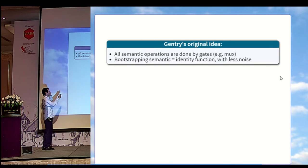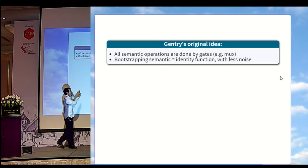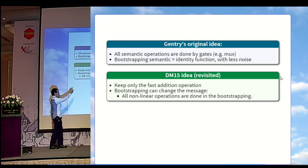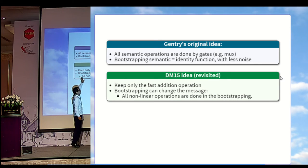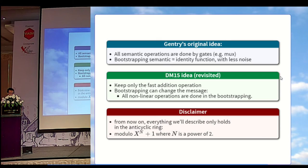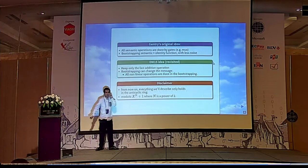Like we said, Gentry's original idea was that all semantic operations have to be done by gates. For example, the Mux gate that we saw earlier. And the bootstrapping semantic will just be the identity function which reduces the noise. What was added last year by Dukas and Mishan CEO scheme, is that for the operation, we'll just keep the very fast addition between ciphertext, but all the other nonlinear operations will be done during the bootstrapping, which means that now the bootstrapping algorithm will be able to change the plaintext. As a disclaimer, everything we'll say from now is only valid modulo x n plus 1.